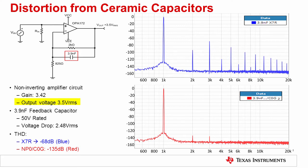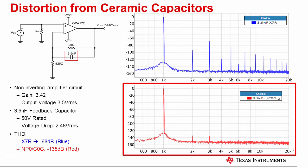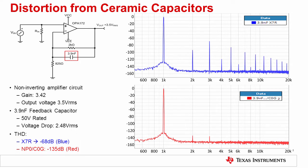In this circuit, the output signal is 3 volts RMS and the voltage across the capacitor is 2.48 volts RMS. Because the X7R capacitor has a high voltage coefficient, its capacitance changes as the voltage across it changes, and it will therefore draw a non-linear current. Notice that if you compare the blue X7R measured results to the red C0G results, the C0G circuit has substantially less distortion. In fact, the harmonics are at negative 135 dB for the C0G circuit, whereas they are at negative 68 dB for the X7R circuit.